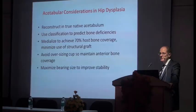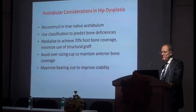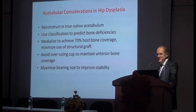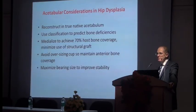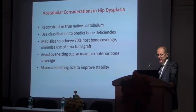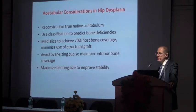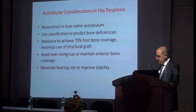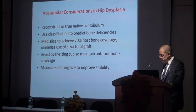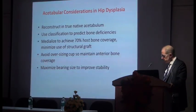So the acetabular considerations in DDH: the aim is to reconstruct in the true native acetabulum. Use the classification to predict what bony deficiency you'll encounter at surgery. Medialise the cup to achieve 70% host bone coverage with minimal use of structural graft. Avoid oversizing the cup and maximise the size of the bearing for stability — these patients, particularly when you do a femoral shortening, do have a higher incidence of dislocation.